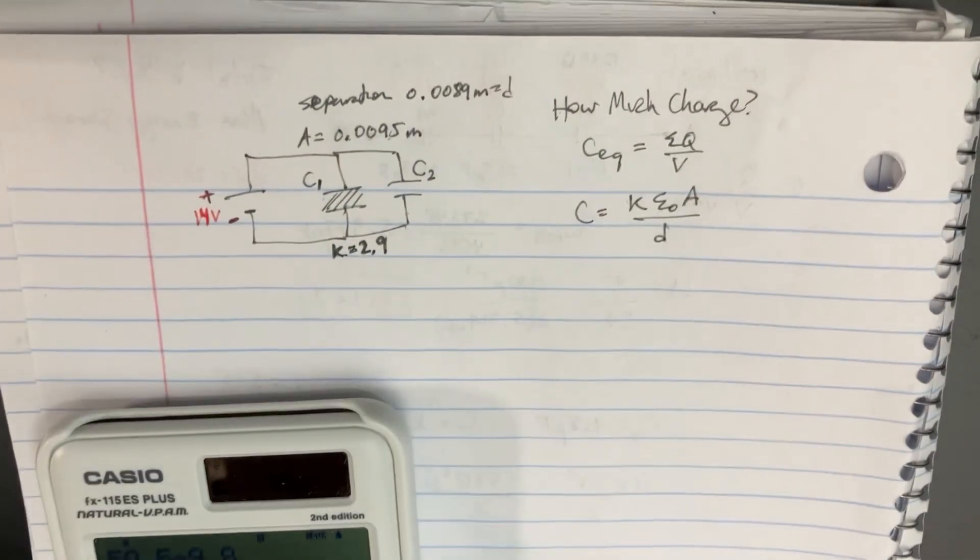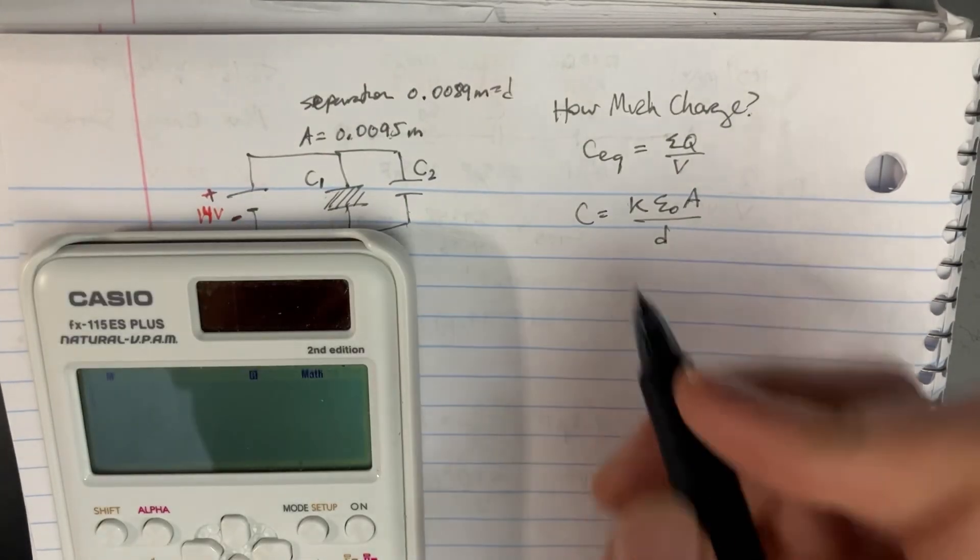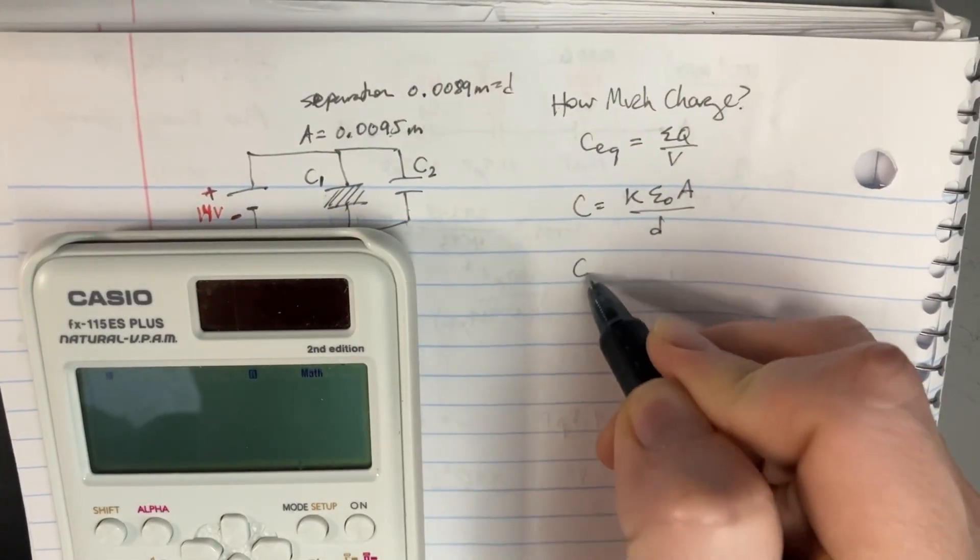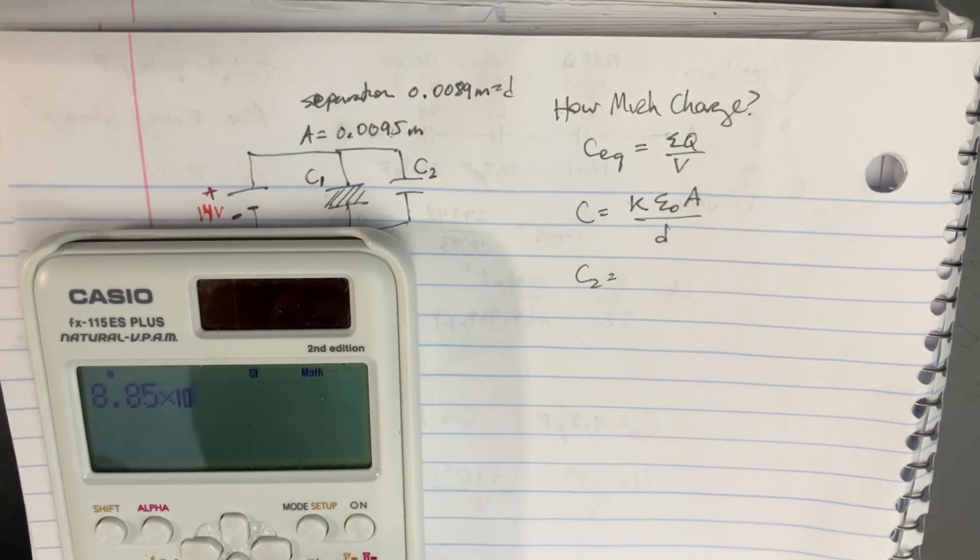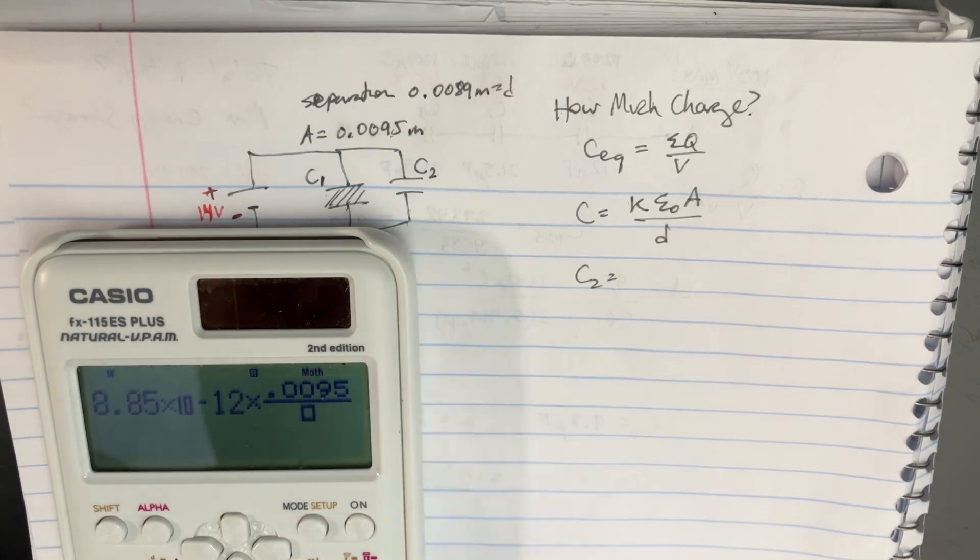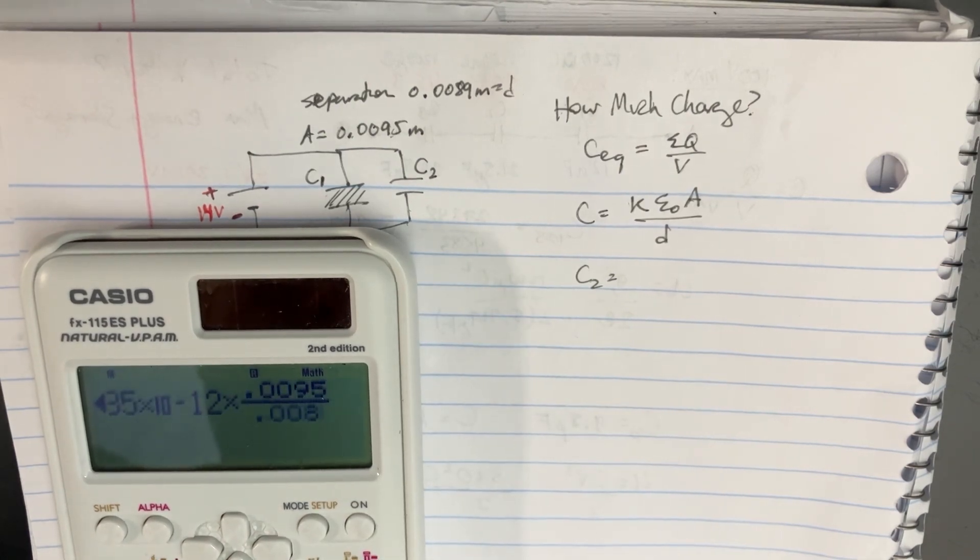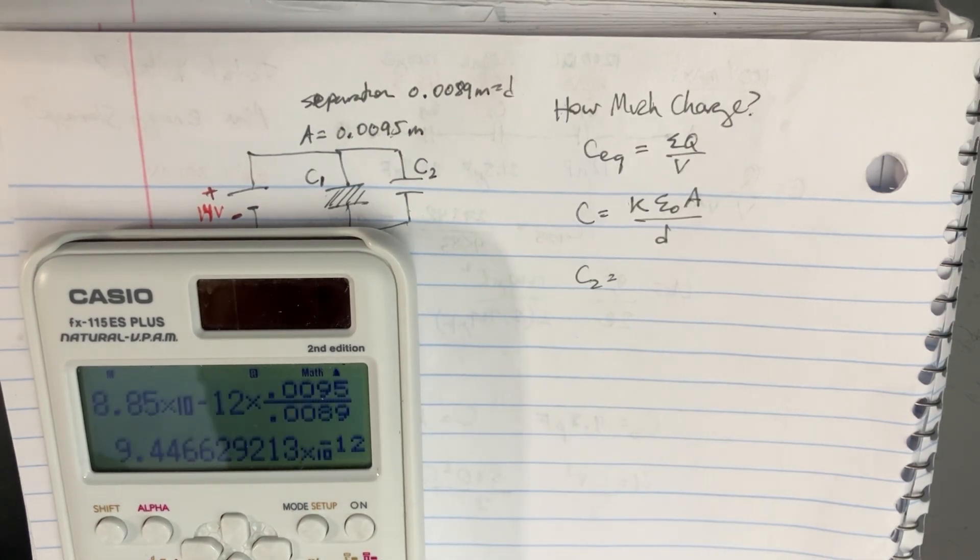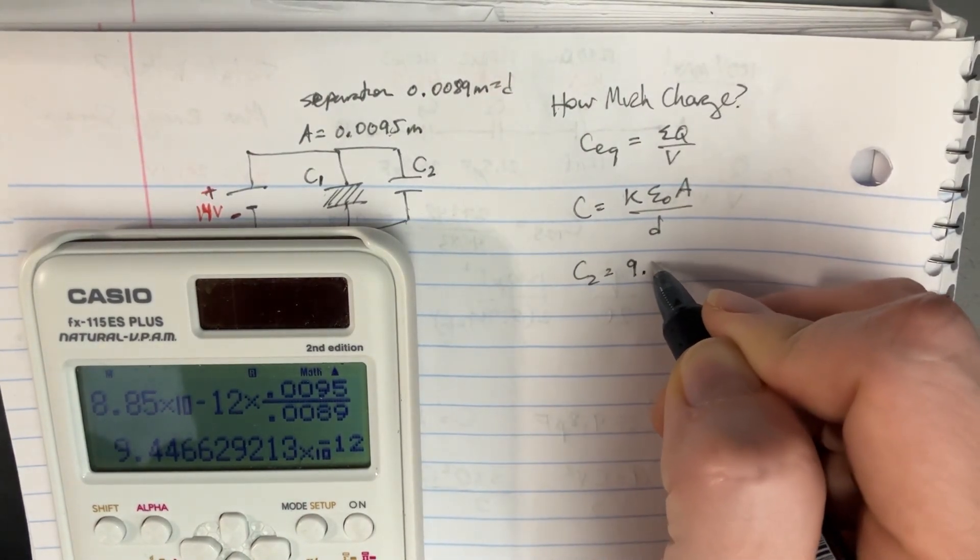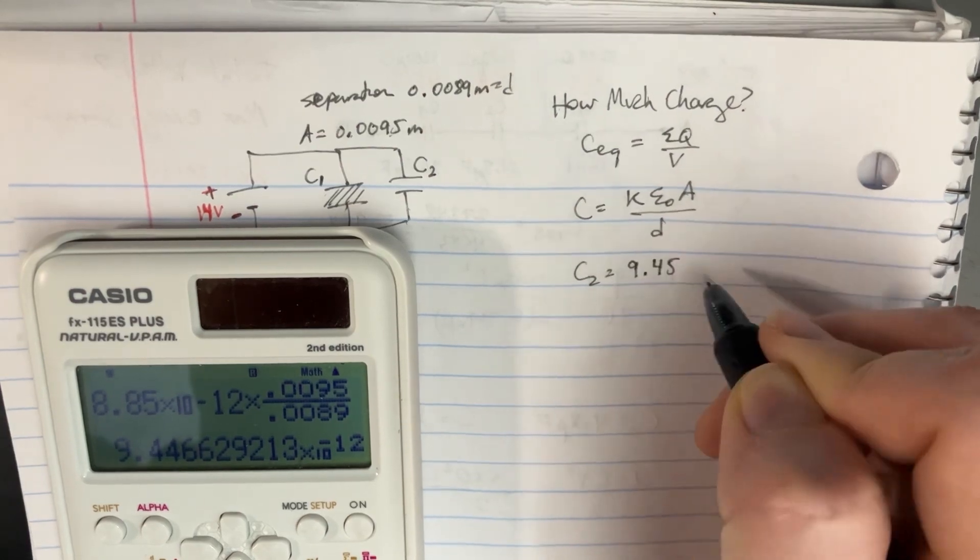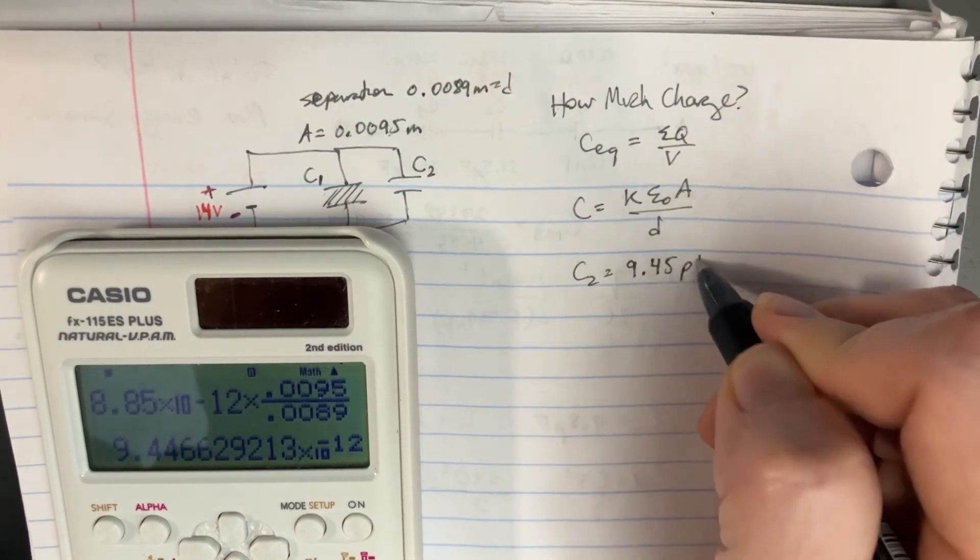So we've got for C2, the one that has no k in it, it's just going to be 8.85e-12 times the area, 0.0095, divided by the distance, 0.0089. And so we get 9.45, and we'll just call that picofarads.